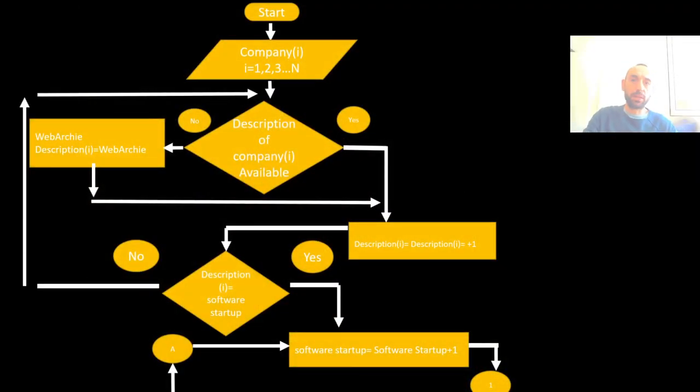I made an algorithm based on Osman's paper — a logical representation of how he collects the data. In his research paper, we start with a set of companies: company 1, company 2, company 3, and so on. He wants to collect the description for each of these companies.